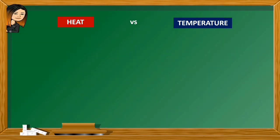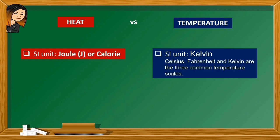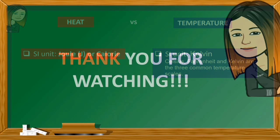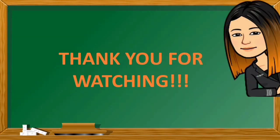The international system of unit or the SI unit for heat is joule or calorie, while Kelvin is the SI unit for temperature. Celsius, Fahrenheit, and Kelvin are the three common temperature scales. Thank you for watching. I hope you learned something.